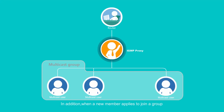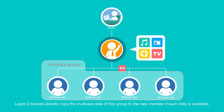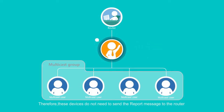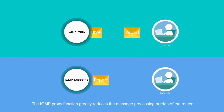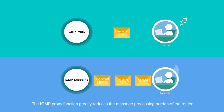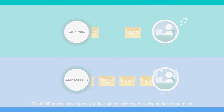In addition, when a new member applies to join a group, Layer 2 devices directly copy the multicast data of this group to the new member if such data is available. Therefore, these devices do not need to send report messages to the router. The IGMP proxy function greatly reduces the message processing burden of the router.